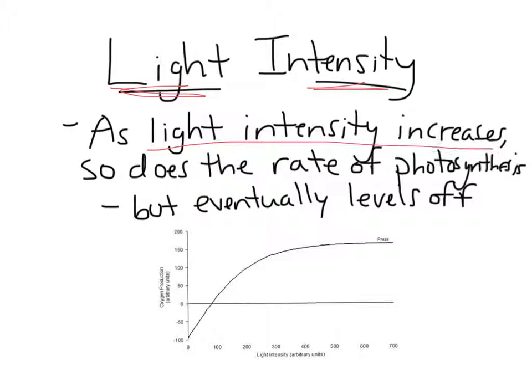And as light increases, so does the rate of photosynthesis, but will eventually level off. So you can see in this graph, it's going to increase as light intensity increases, and then will level off at some point because there's just no more electrons and chlorophyll to be excited.